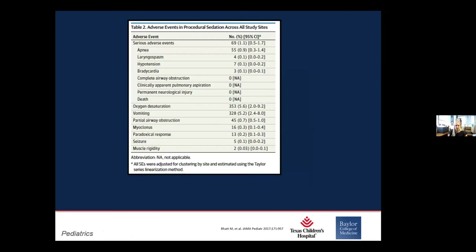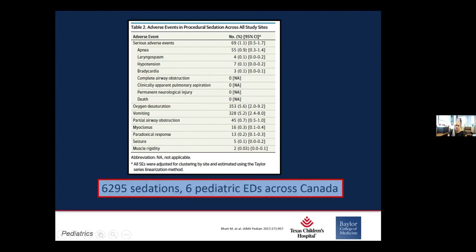Looking at adverse events and sedation across sites — this study by Dr. Malabat looking across the Canadian networks found that serious adverse events occurred at about a 1% rate overall, with apnea being the largest at 0.9%, and rare other serious adverse events. Luckily, there was no permanent neurological injury or death. For other adverse events, overall oxygen desaturation was in about a 5.6% range, and vomiting in about 5% — ranges that have varied based on research studies. This was for 6,295 sedations across six EDs across Canada, and over half did receive ketamine alone.